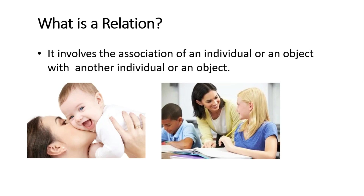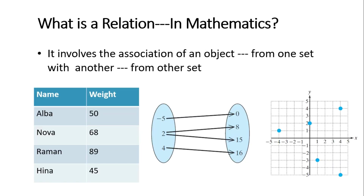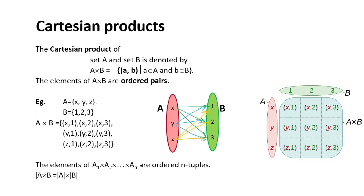What is a relation? It involves the association of an object or an individual with another individual or object. In mathematics, a relation involves the association of an object from one set with another from a different set.